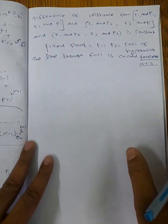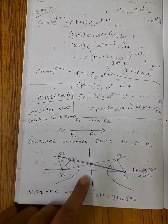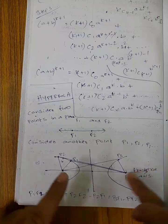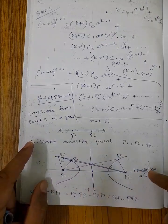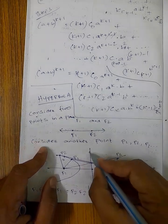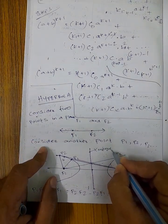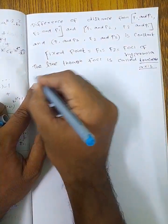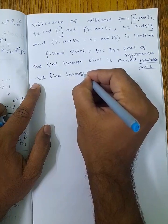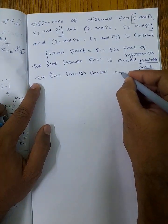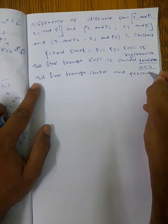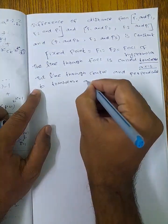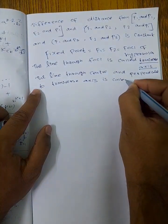Next, the line through the center and perpendicular to the transverse axis is called the conjugate axis. So the line through center, perpendicular to transverse axis, is called the conjugate axis.